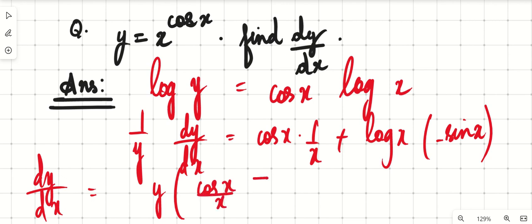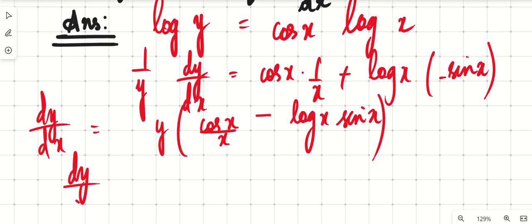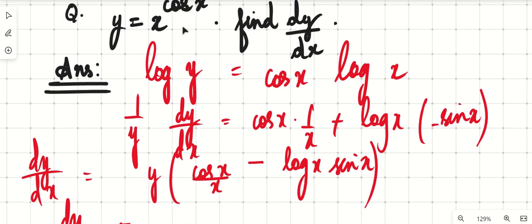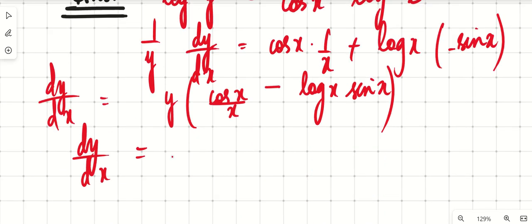So dy/dx is y... what? See, from the question, y equals x raised to cos x. So dy/dx is x raised to cos x times (cos x/x minus log x sin x). This is the final answer. Such a very simple question.